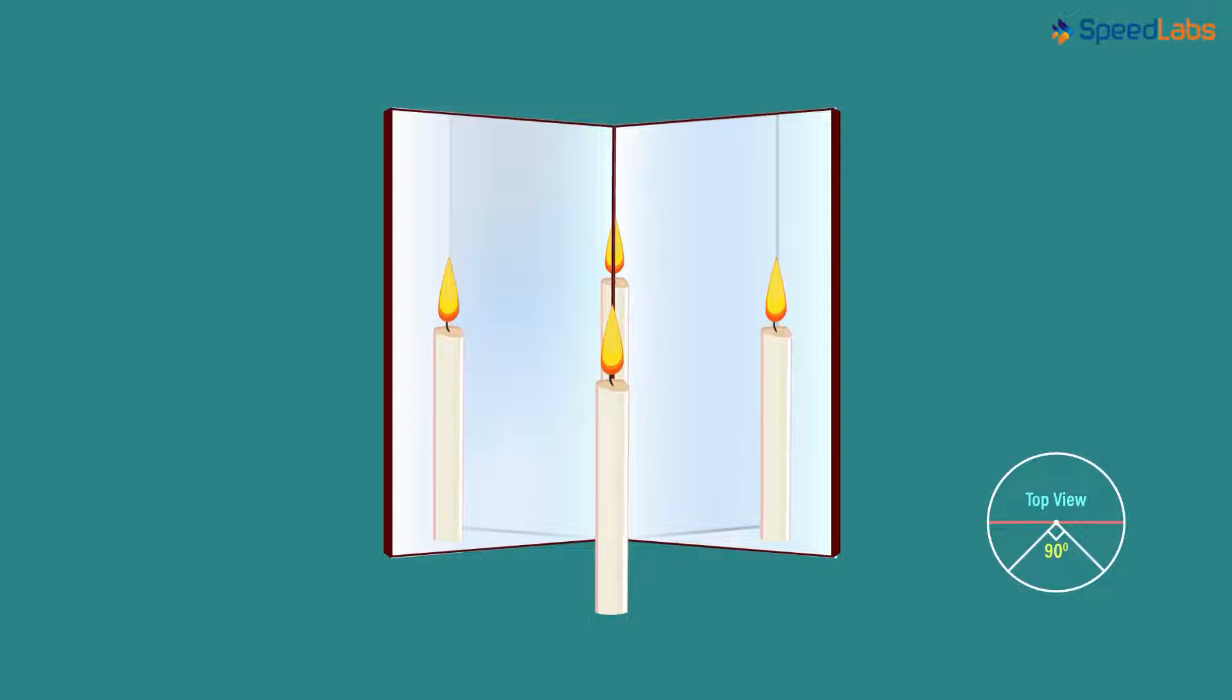Now the formation of two of the images must be obvious to you. These two images are formed due to the light rays from the candle falling on their surfaces. What about the third candle you see here? How is it formed?